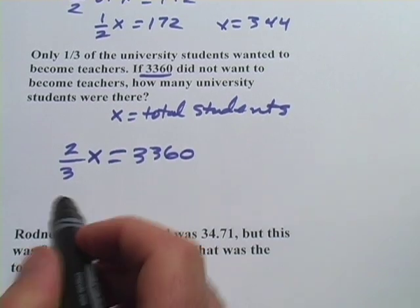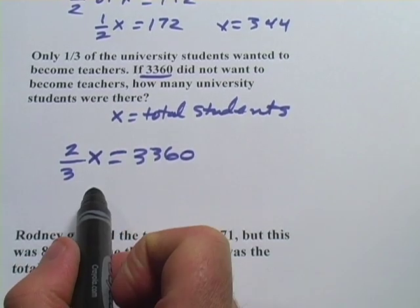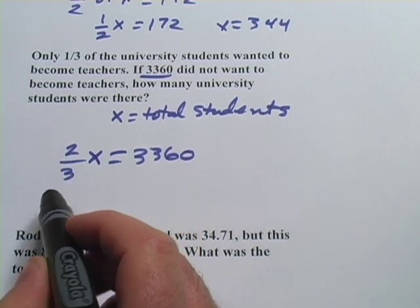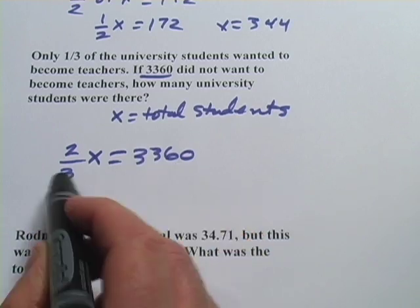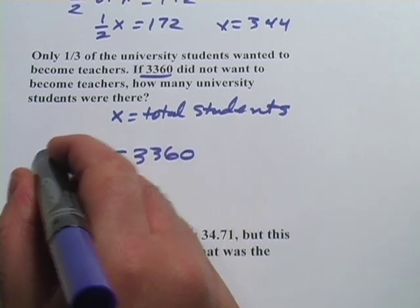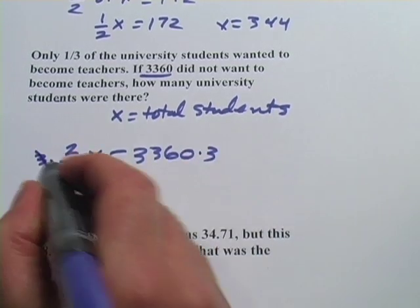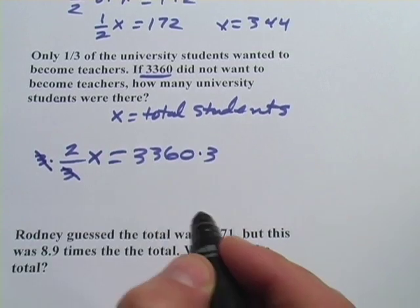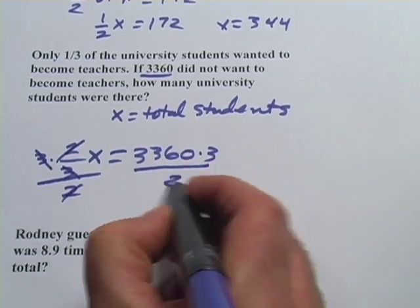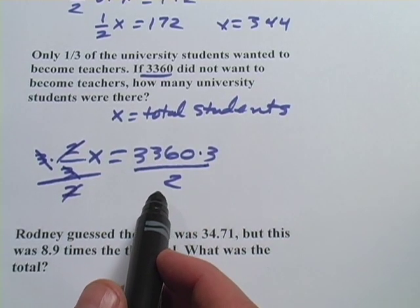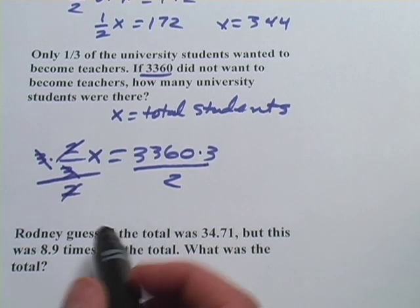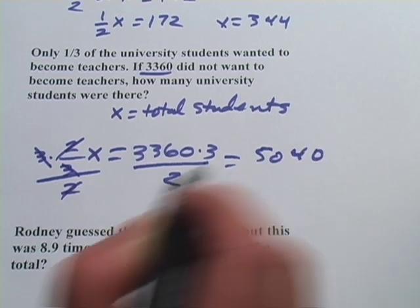Now we have an equation that we can solve for x, and that will give us the total number of students. When I have a fraction like this in front of my x, I usually do a two step process. I multiply both sides of the equation by three to get rid of the denominator, then I divide by two. So you could think about it like this, and then divide the whole thing by two to get rid of that. And the arithmetic comes down to 3360 times three divided by two, and that equals 5040 students.